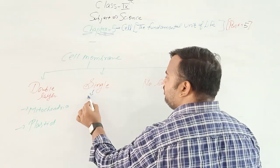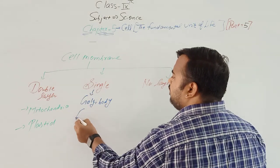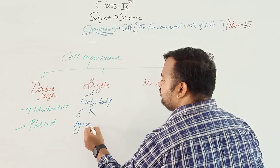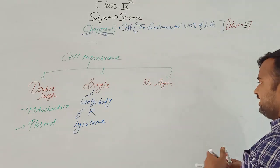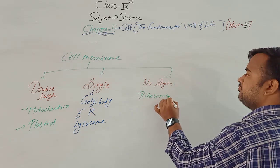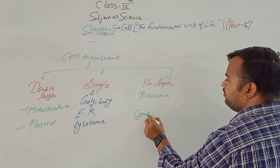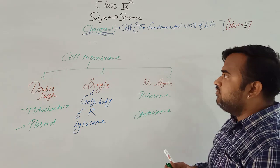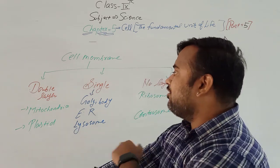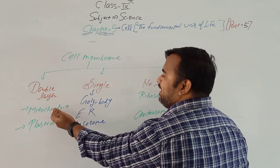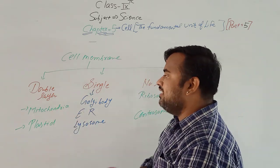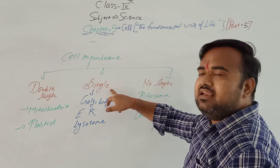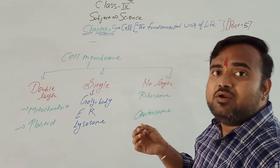Under single layer, the first would be Golgi body, then endoplasmic reticulum, and third would be lysosome. The no-layer structure includes ribosome and centrosome — these are cell organelles which have no layer of cell membrane.